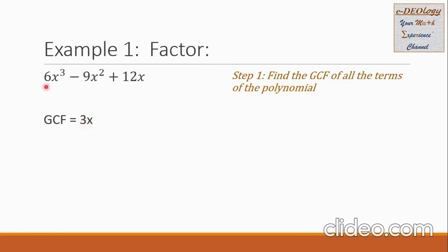Looking at the numbers 6, 9, and 12 — the greatest common factor of these three numbers is 3. For the variables x cubed, x squared, and x — the greatest common factor is x. So the GCF of this trinomial is 3x.